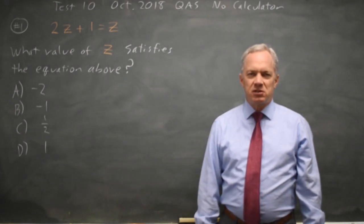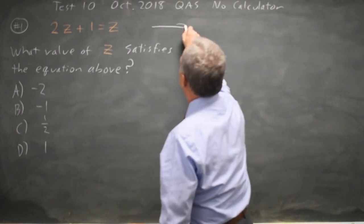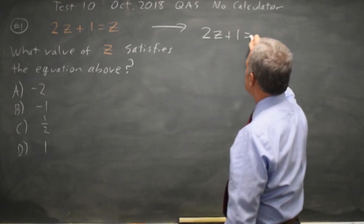This is question one. The College Board is asking us to solve a linear equation with only one variable, 2z plus 1 equals z.